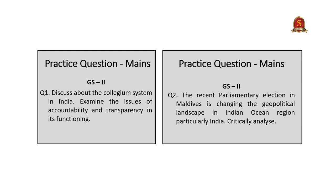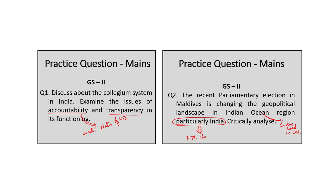For the mains practice questions: the first question asks to discuss the collegium system in India and examine the issues of accountability and transparency in its functioning. The first part can be answered with a brief introduction of the collegium, and the second part can be addressed using points from the news analysis like disclosure of judges' assets and status of the CJI as a public authority. The second mains question states: 'The recent parliamentary elections in Maldives are changing the geopolitical landscape in the Indian Ocean region, particularly for India — critically analyse.' Here, one may discuss India taking a lead in Indian Ocean security due to the reduced Chinese tilt of Maldives, as well as the possibility of signing an FTA and points like the clean energy partnership.